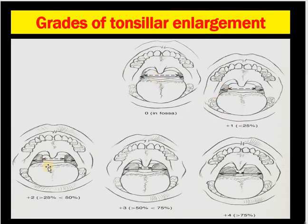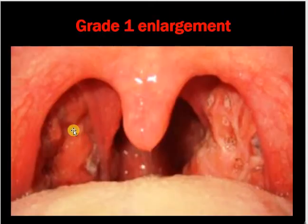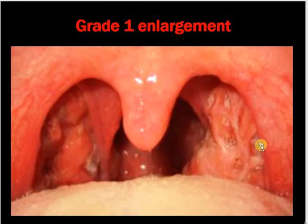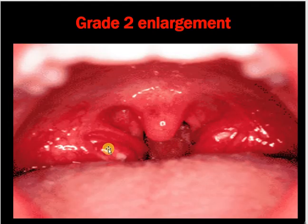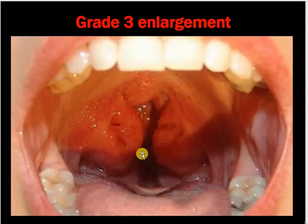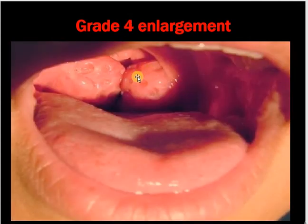The grading is calculated as: (total intertonsillar distance minus tonsil-to-tonsil distance) divided by total distance, multiplied by 100%. For example, if total distance is 10 cm and tonsil distance is 8 cm, then (10 − 8) / 10 × 100% = 20%, which is grade 1. Grade 1 tonsils are just outside the tonsillar pillars. Grade 2 is approximately 50%. Grade 3 is 50–75%. Grade 4 are the kissing tonsils.